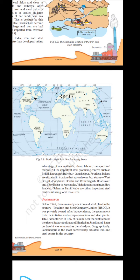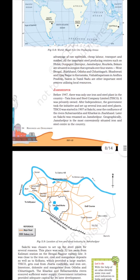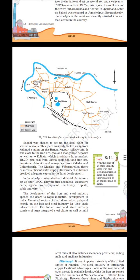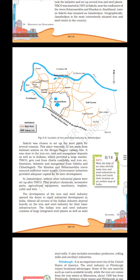Jamshedpur: Before 1947 there was only one iron and steel plant in the country — Tata Iron and Steel Company Limited (TISCO), which was privately owned. After independence, the government set up several iron and steel plants. TISCO was started in 1907 at Sakchi, near the confluence of the rivers Subarnarekha and Karkhai in Jharkhand. Later Sakchi was renamed Jamshedpur. Geographically, Jamshedpur is the most conveniently situated iron and steel centre in the country.